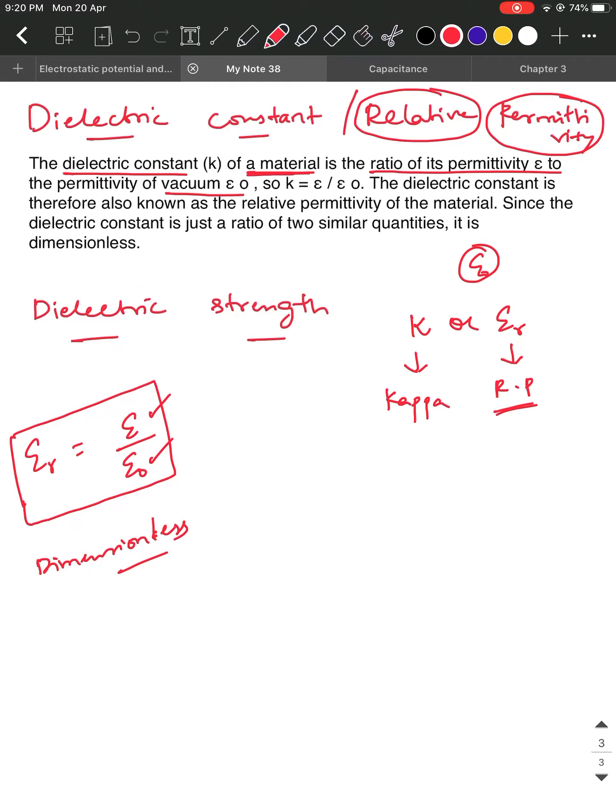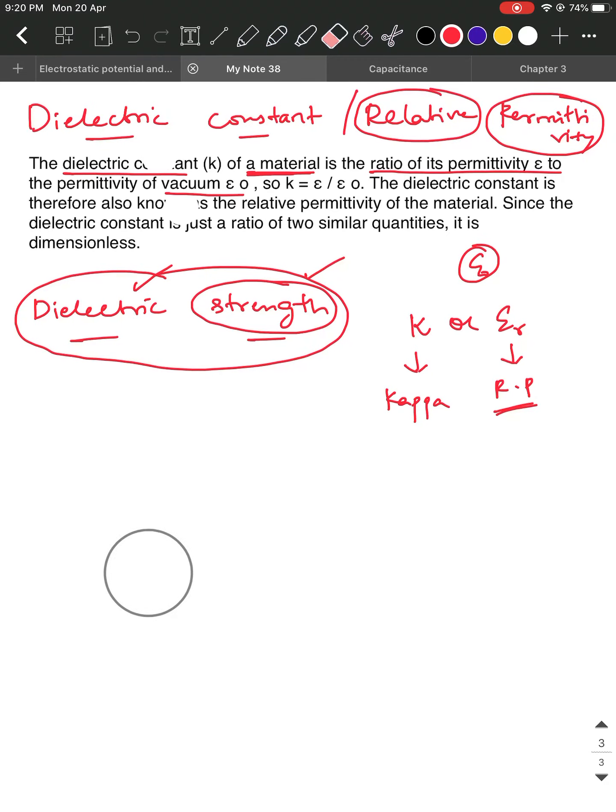Next, there is another term called as dielectric strength. So please have a clarity that dielectric constant is different from dielectric strength. Dielectric strength, as the name suggests, is the strength of the dielectric, meaning how strong is the dielectric able to withstand the external force.